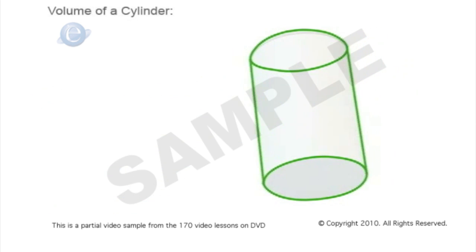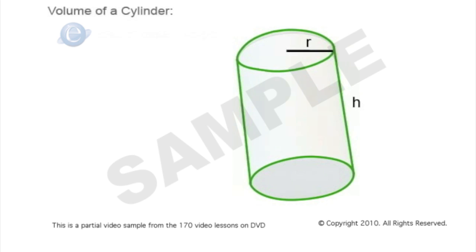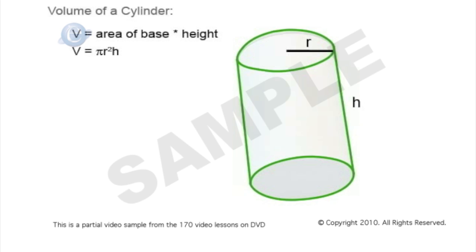The volume of a cylinder, again we said was the area of its base. Its base is a circle, so the area of a circle which we haven't really talked about yet is pi r squared times its height which is h. So pi r squared h is the volume of a cylinder.